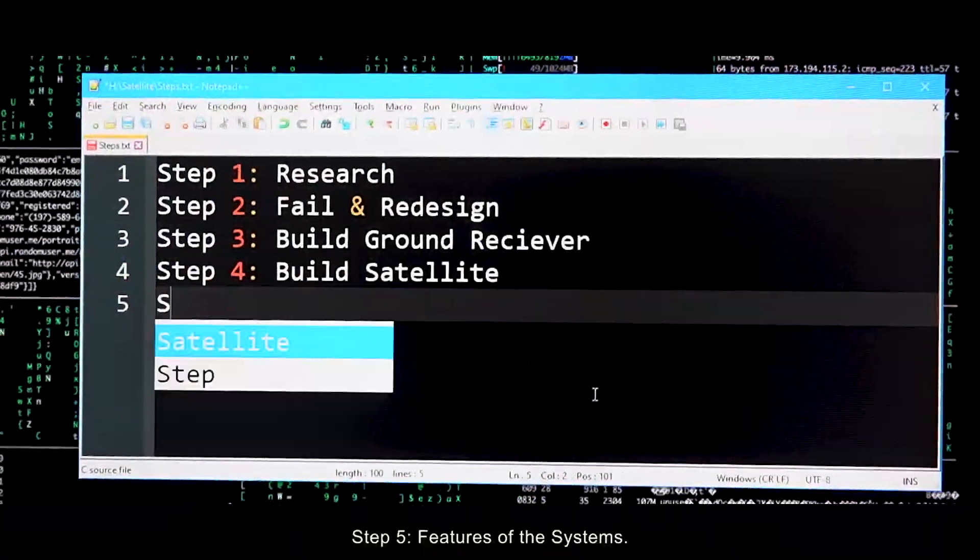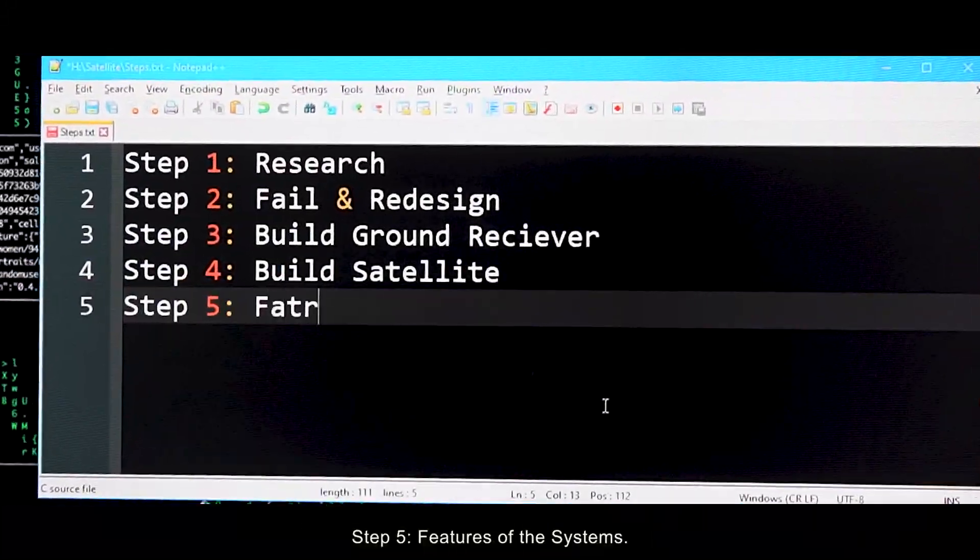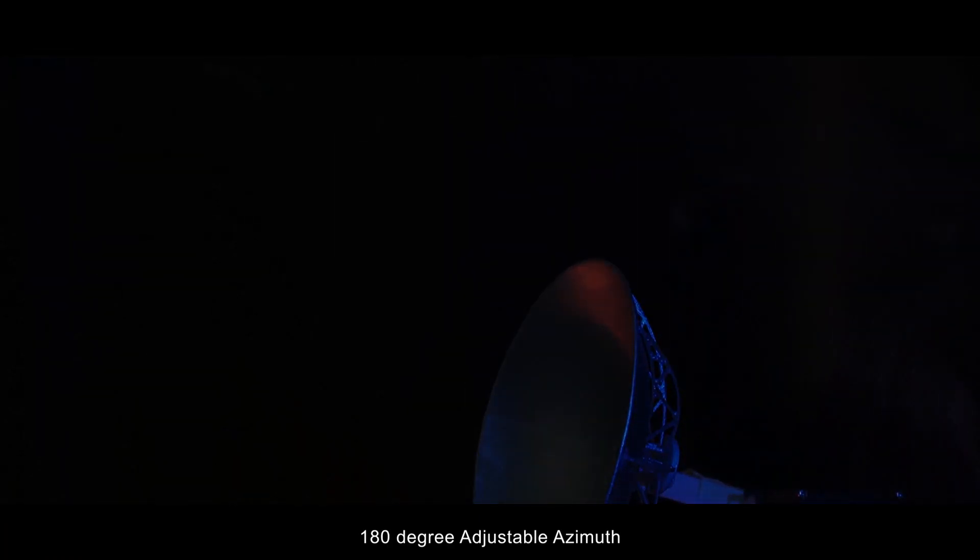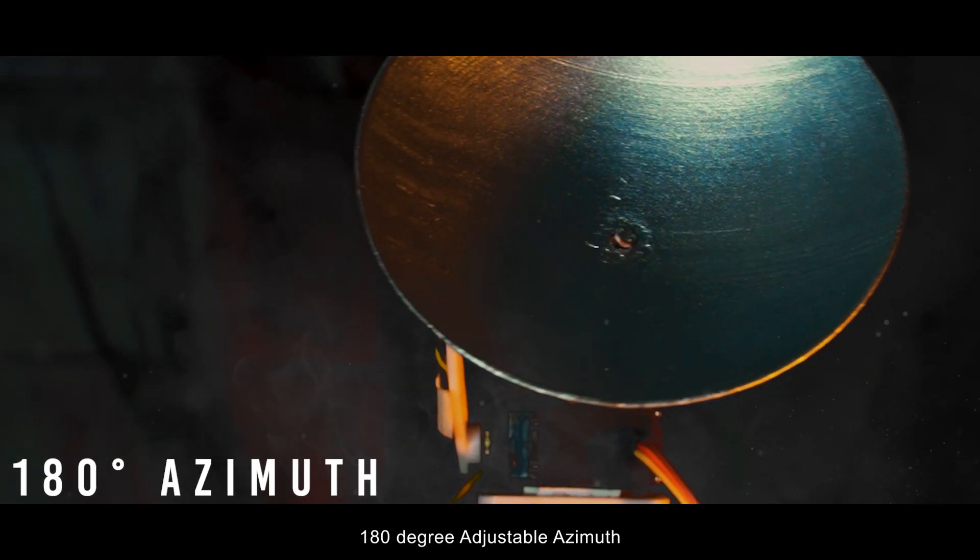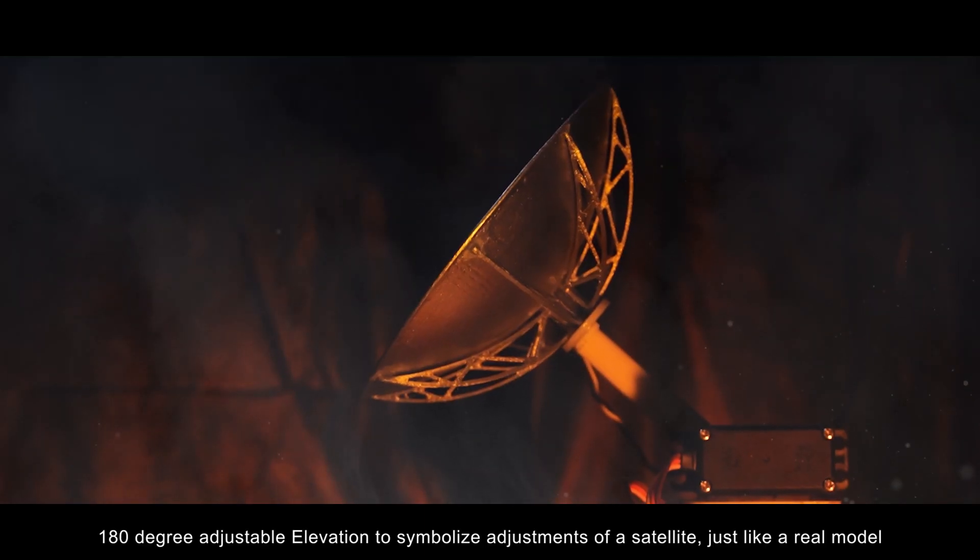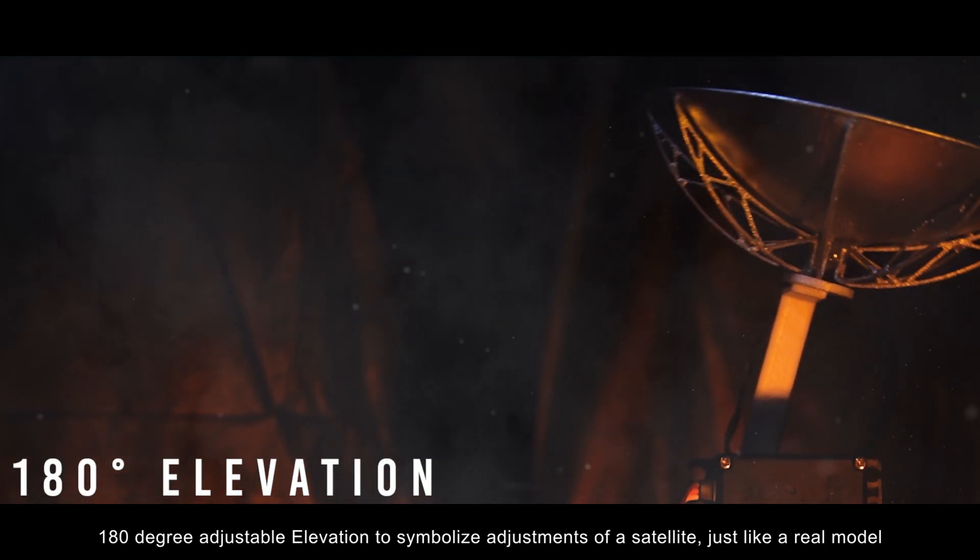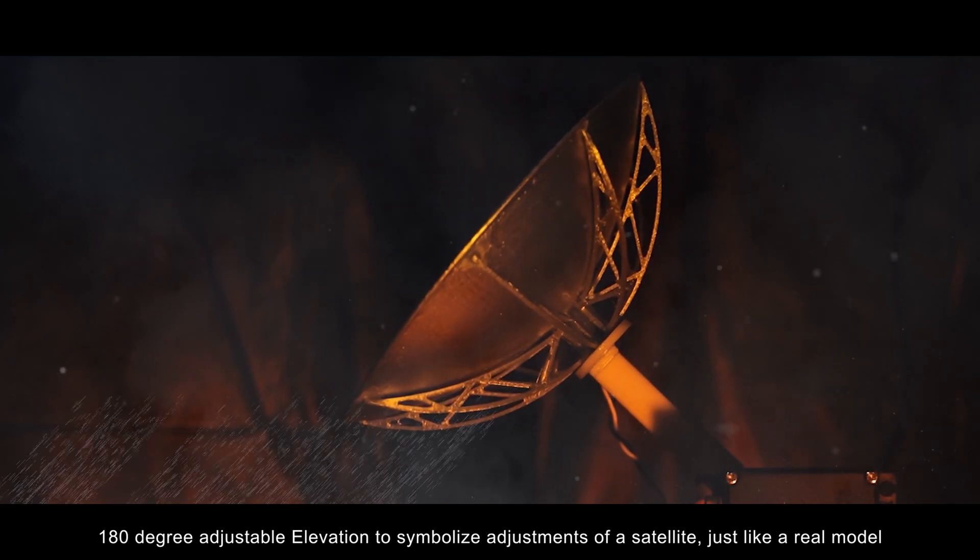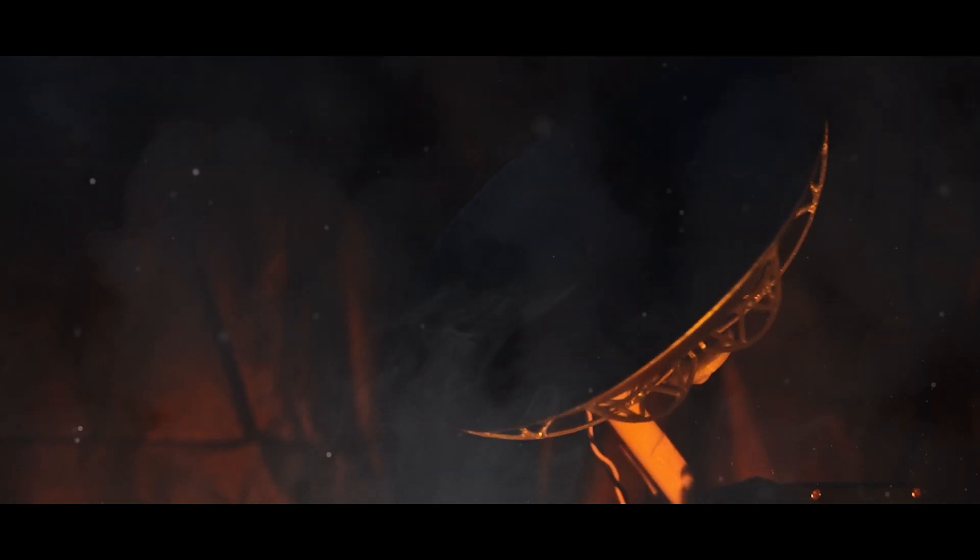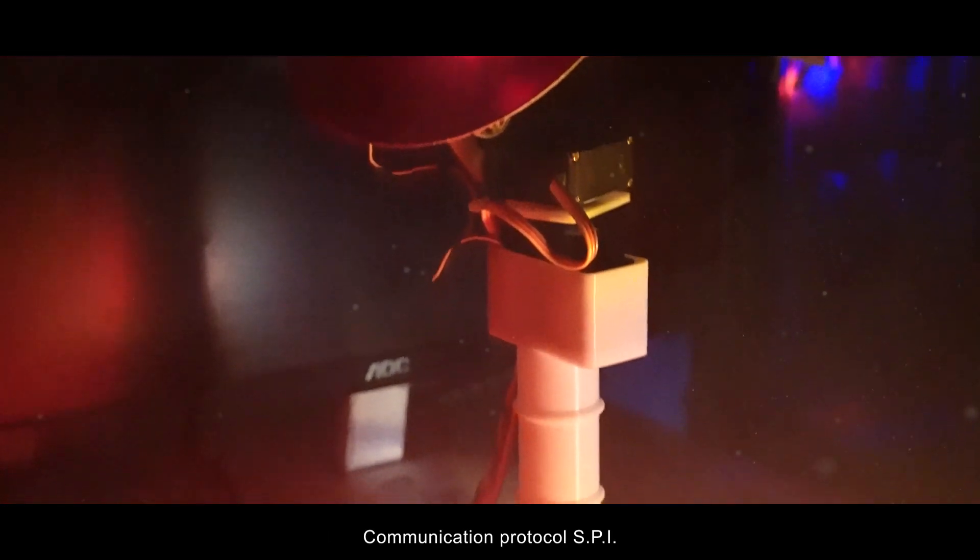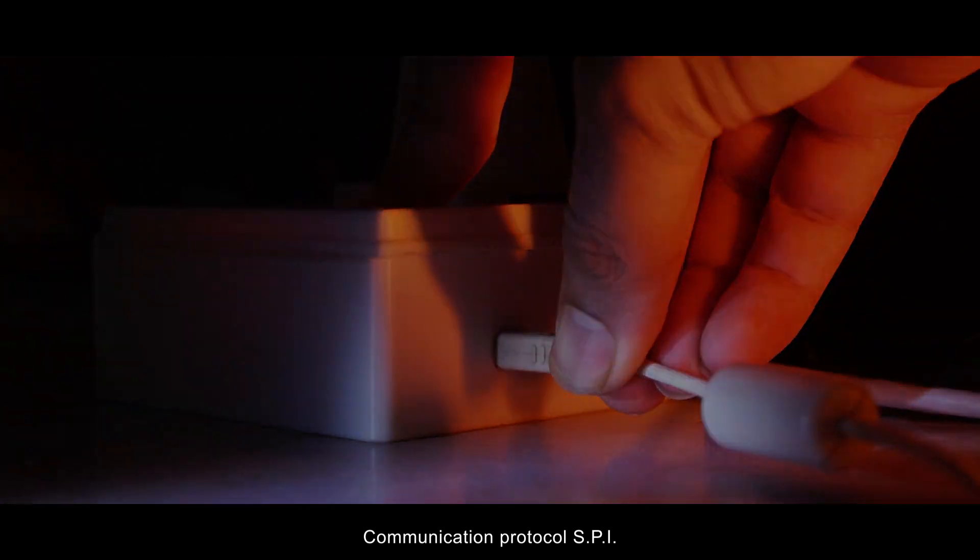Step 5: Features of the system. Ground Station: 180 degree adjustable azimuth, 180 degree adjustable elevation to symbolize adjustments of a satellite just like a real model. LDR receiver with high gain op amp. Communication protocol SPI.